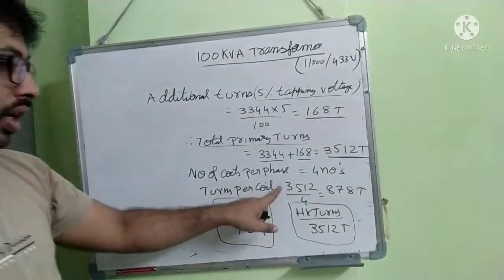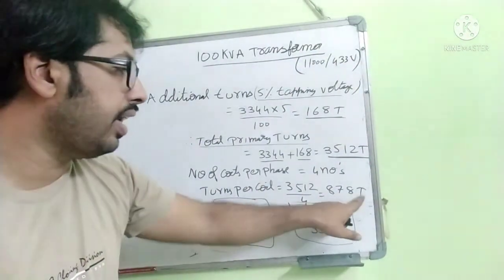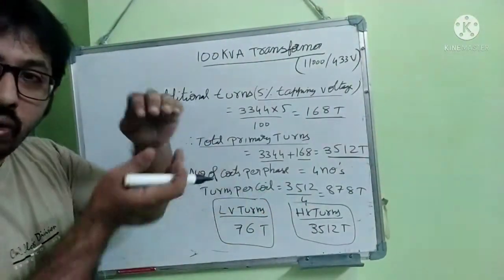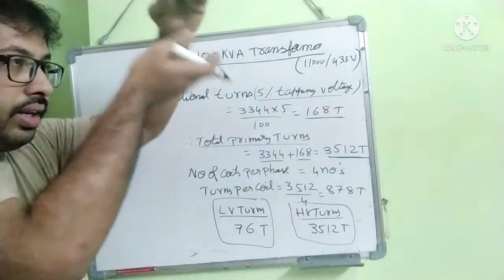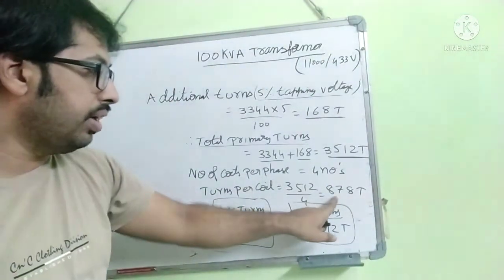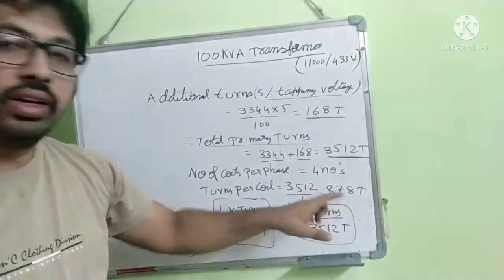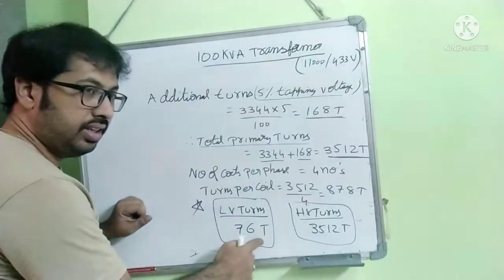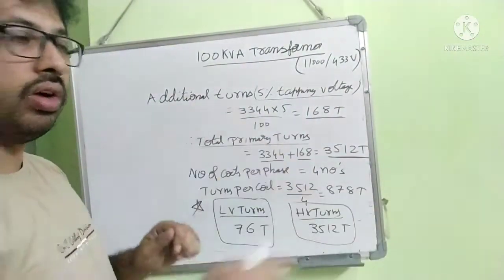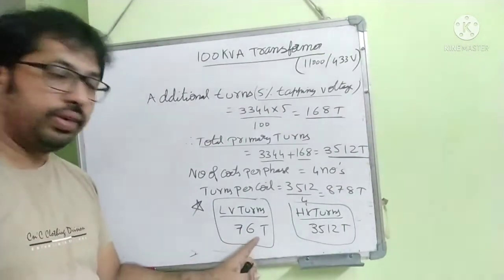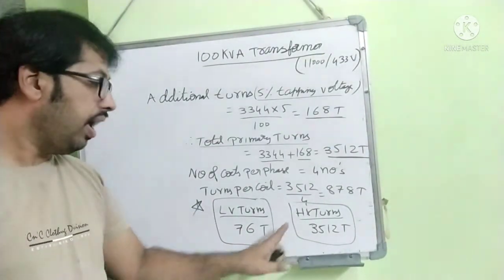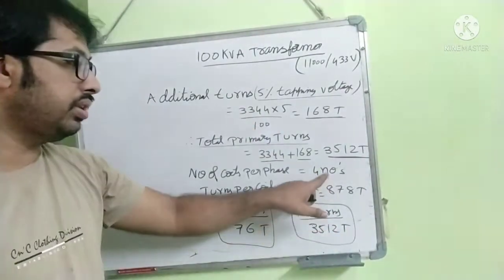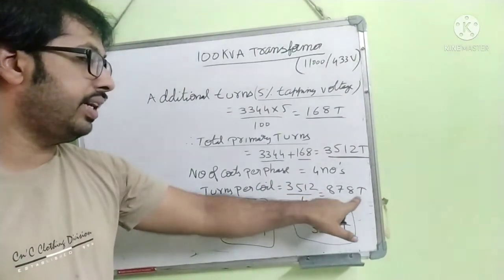So per phase, how many coils we have to place for HV winding? I think it is 4 numbers. So divide with 4. So 3512 per 4, 878 turns per coil. Like this we will keep 1 coil, 2 coil, 3 coil, 4 coils. Each coil has 878 turns. So totally today in design, we derived LV number of turns, 76 turns. We will tell the winding person to do the winding of 76 turns. And HV turns, 3512 turns. Per coil is 878 turns.